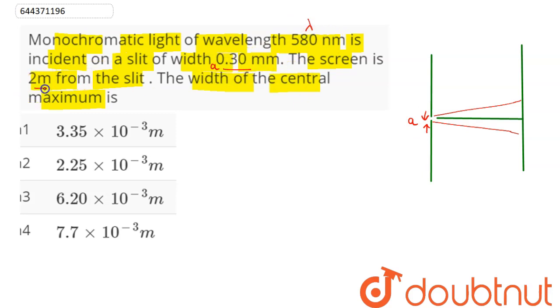So, this is A here 0.3 mm and this is the distance between the source and the slit which is represented as capital D which is equal to 2 meter.